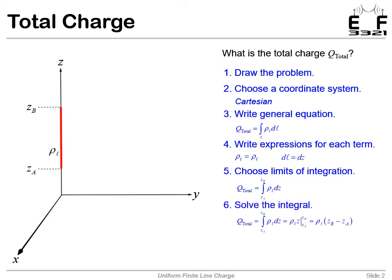Now we can go ahead and integrate that. Well, the rho L is a constant. That can come to the outside of the integral. So we just have an integral from ZA to ZB. And so the answer ends up being rho L times ZB minus ZA, and this difference here is the total length of the charge.